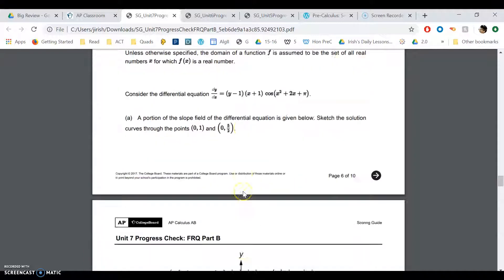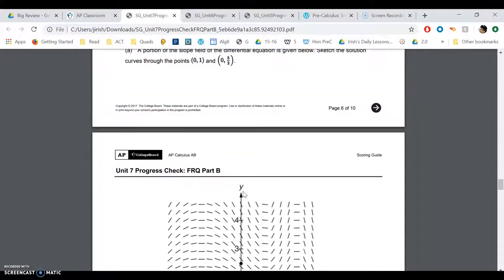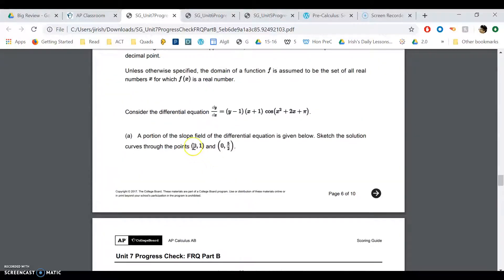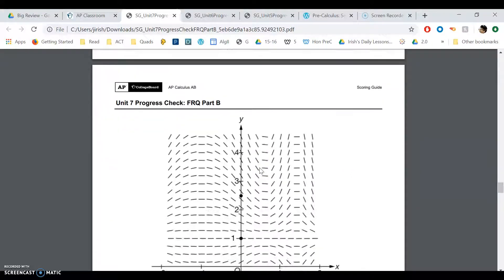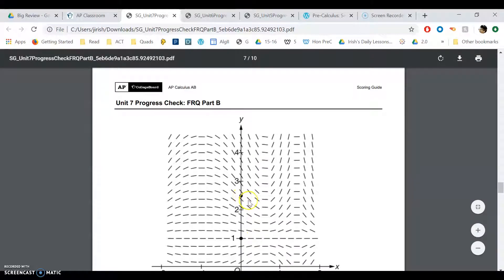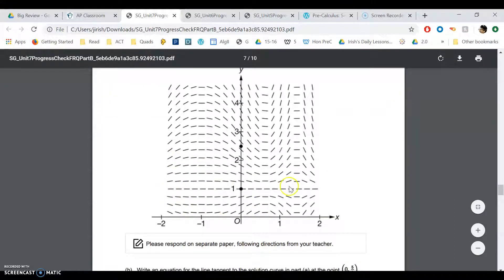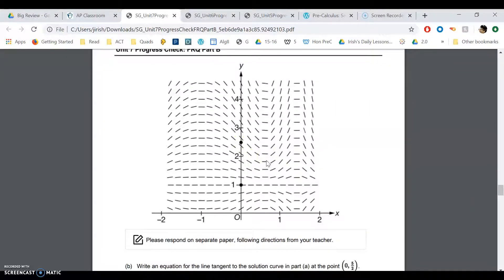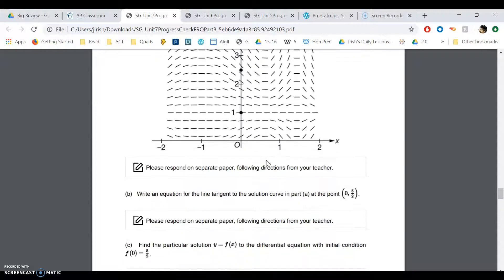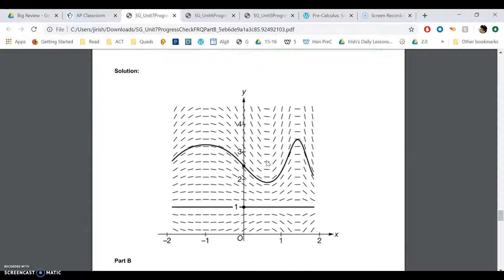The first part probably won't be on the AP because you have to sketch. This is actually pretty easy - just follow the slope field. Sketch the solution between 0,1 and 0, 5/2. They give you the points right here. You're just going to sort of follow the slopes and draw a line. Just imagine right now what it would look like, trace it in your mind or on your paper. There it is.